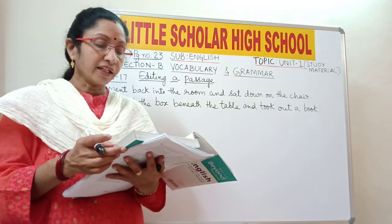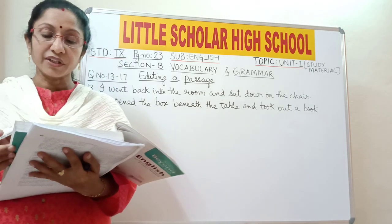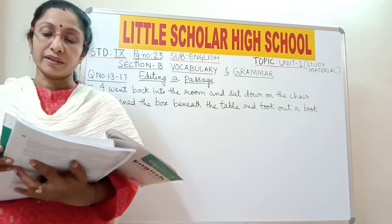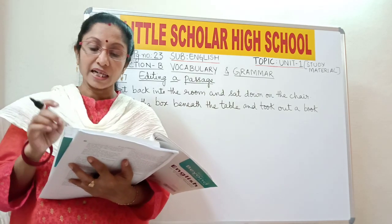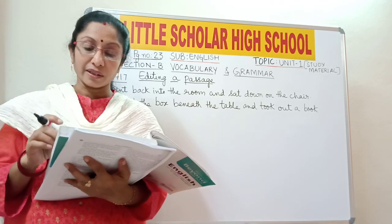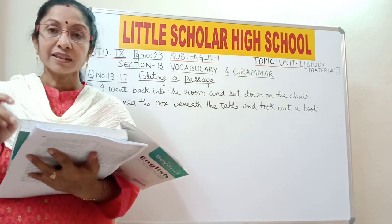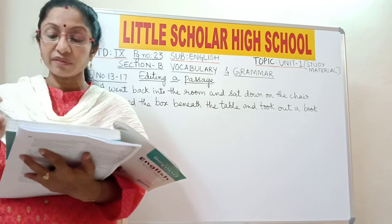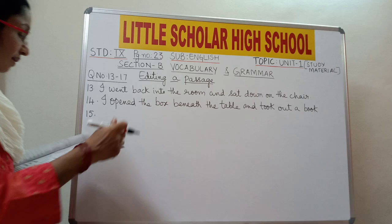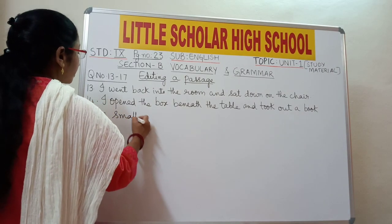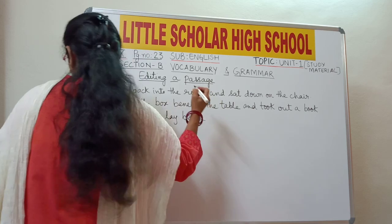'I opened it at the table on which stood the lamp and a large mirror. A small comb lay besides the mirror.' The word 'besides' means 'in addition to,' so it is wrong here. 'Besides' should be replaced with 'beside' — 'a small comb lay beside the mirror' — meaning just on the side of the mirror.